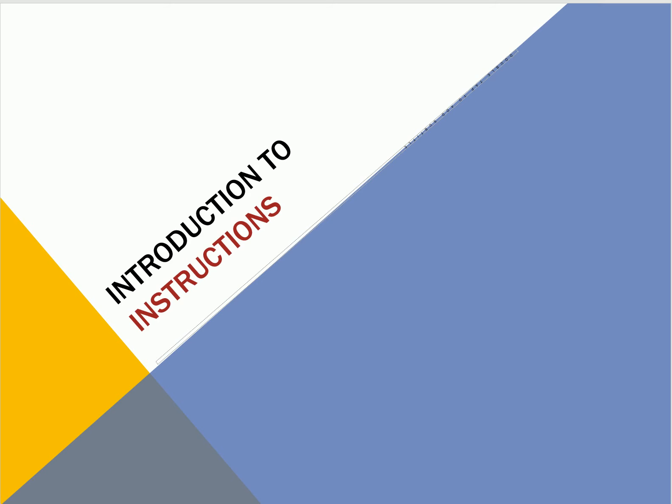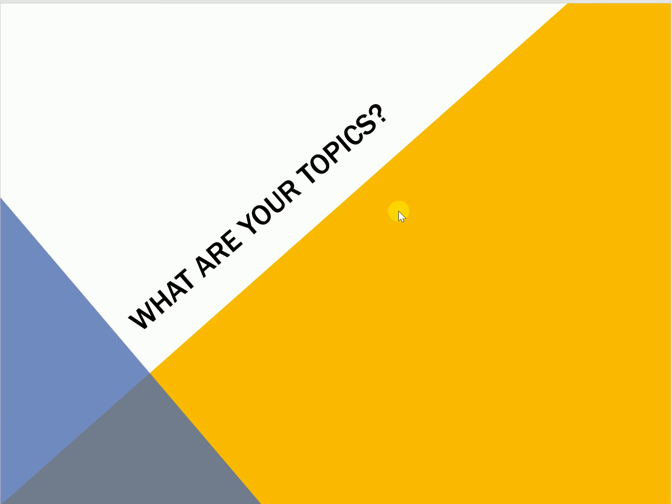The first question you need to ask yourselves for this unit is what the topic of your instruction set is going to be. This is up to you, but I have a couple of criteria you need to follow to make sure your assignment turns out well. First, you need to make sure that you are choosing an actual technical topic — that means choosing a topic in which you are using some kind of tool or technology to complete a technical task.